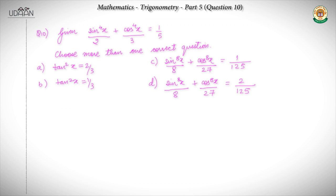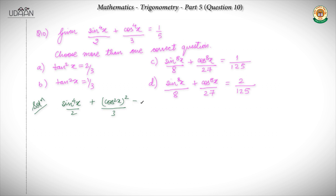This is a multiple choice question, so we have to examine each and every option. For this problem, I will first simplify the given expression. I will write sin⁴x/2 plus cos²x whole squared upon 3 equals 1/5.